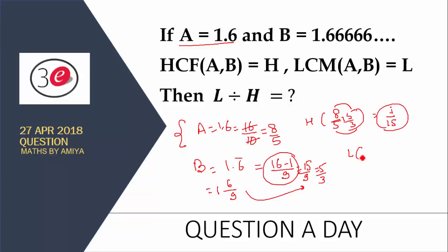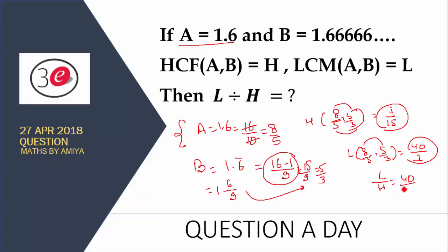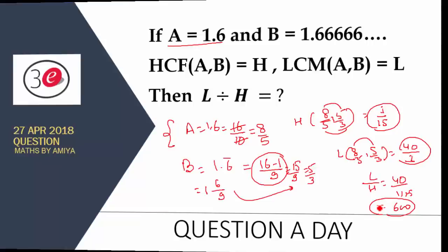If you are finding the LCM, then find the LCM of the numerators and the HCF of the denominators. So we have HCF = 1/15 and LCM = 40, and we need to find LCM divided by HCF, which is nothing but 40 upon 1/15. So the answer of this question is nothing but 600, and this is the final answer.